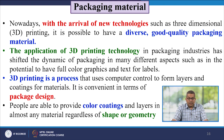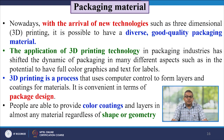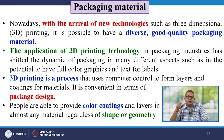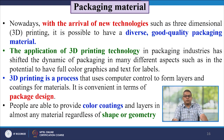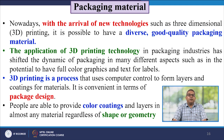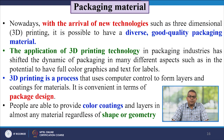Nowadays, with the arrival of new technologies like three-dimensional printing, it is possible to have diverse, good quality packaging material. The application of 3D printing technology in the packaging industry has shifted the dynamics of packaging in many ways, including the potential for full colour graphics and text for labels. 3D printing uses computer-based control to form layers and coatings of material, and is convenient in terms of packaging design for almost any shape or geometry.